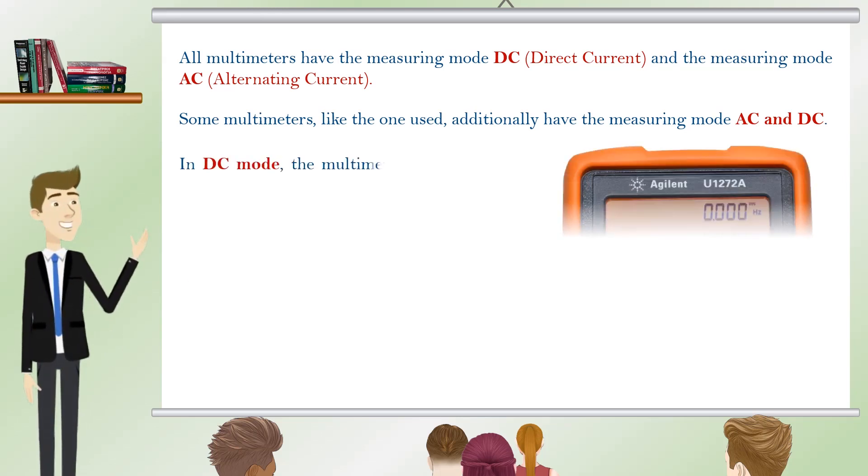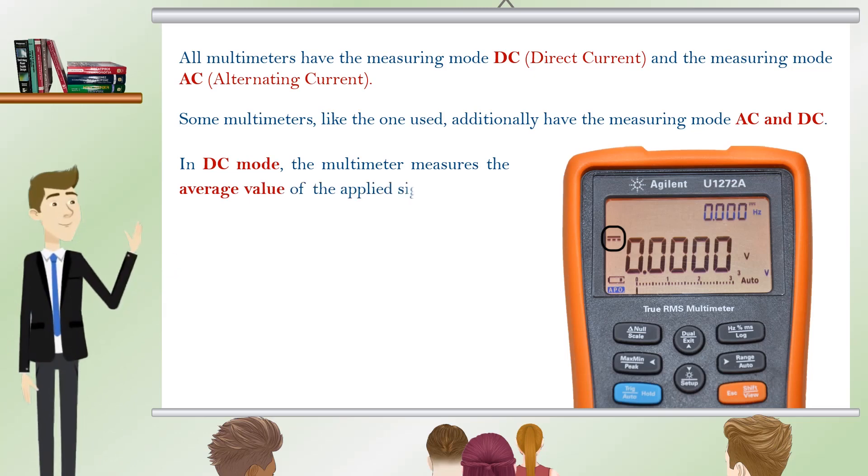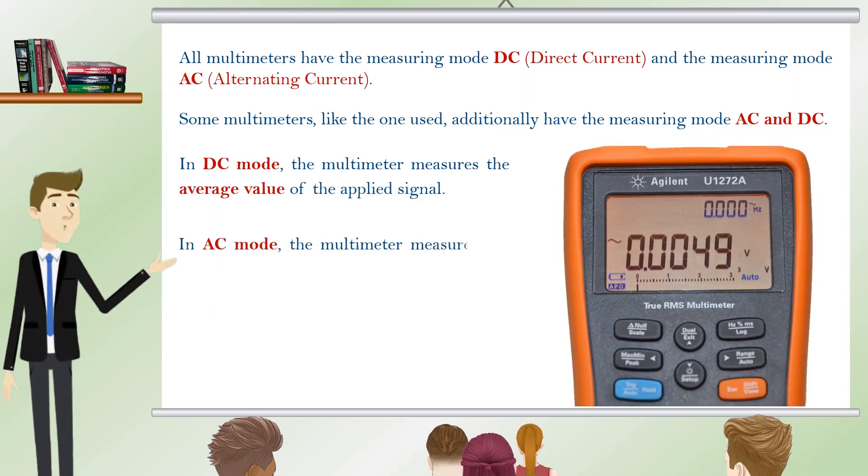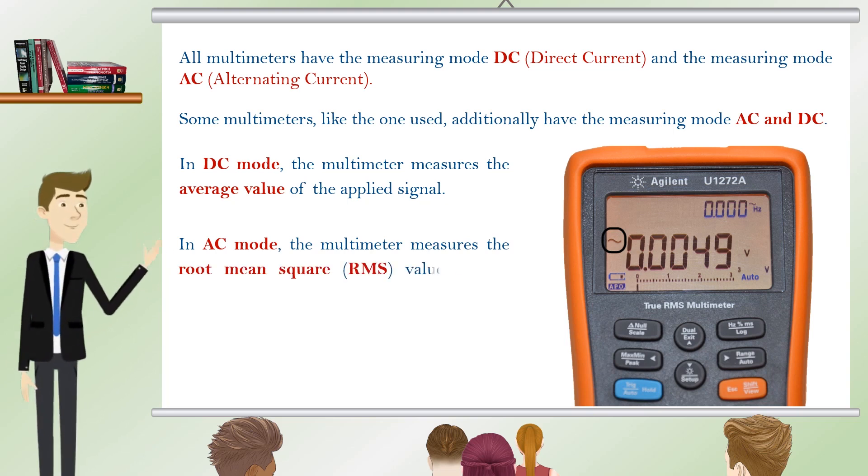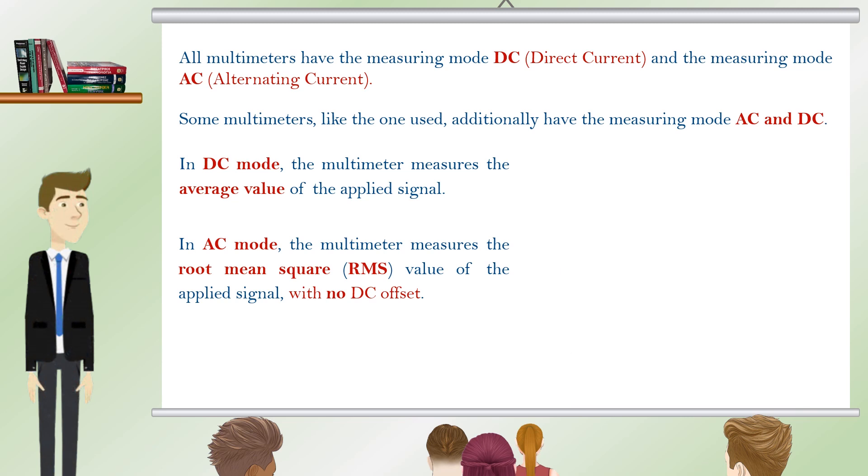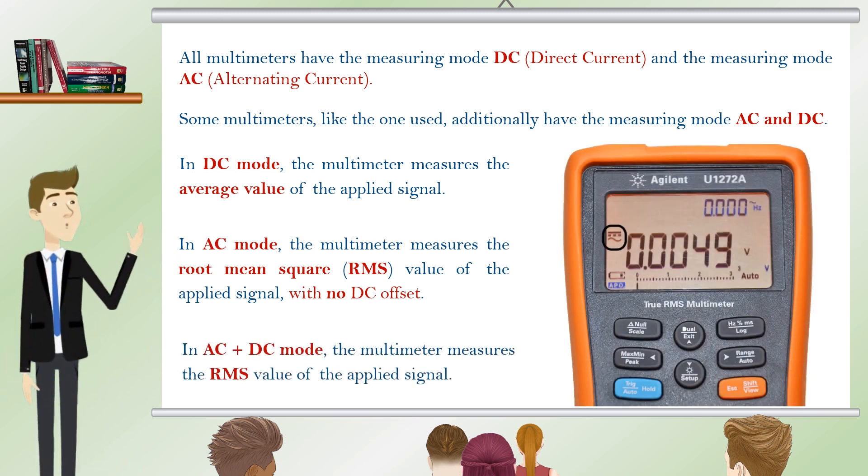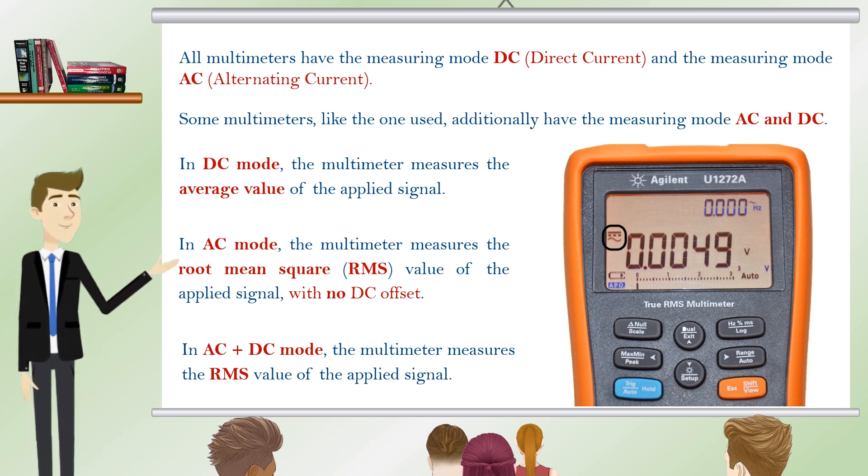In DC mode the multimeter measures the average value of the applied signal. In AC mode the multimeter measures the root mean square RMS value of the applied signal with no DC offset. In AC and DC mode the multimeter measures the RMS value of the applied signal.